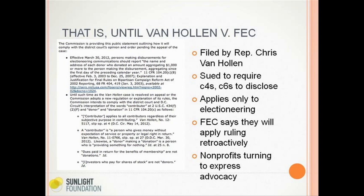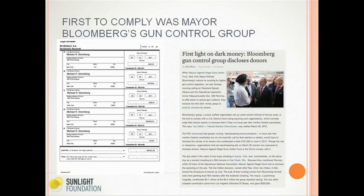The bottom line is that many nonprofits have turned to express advocacy, running independent expenditures instead of electioneering communications. There is one group so far to comply with Van Hollen versus FEC: the Mayors Against Illegal Guns Action Fund, a 501(c)(4) organization. When they ran ads calling on both Mitt Romney and Barack Obama to develop plans to end handgun violence, they had to disclose their donors. The bulk of the money — $3.1 million out of about $3.4 million raised — came from Bloomberg himself. So we're actually seeing some donors to a C4 group.